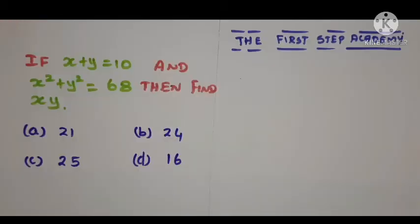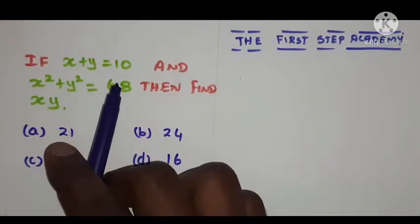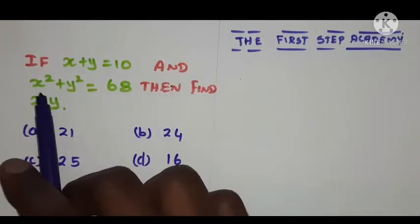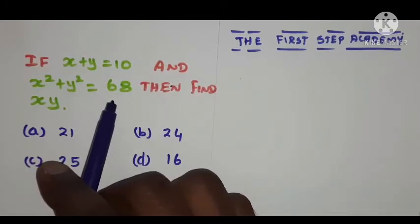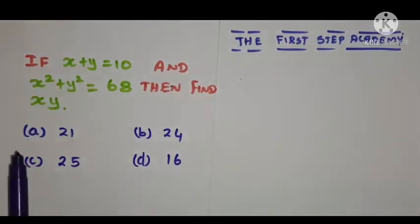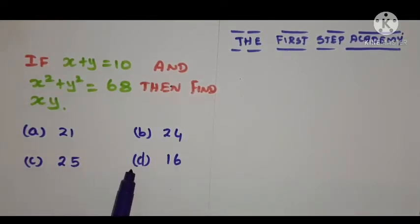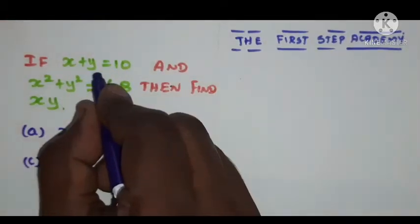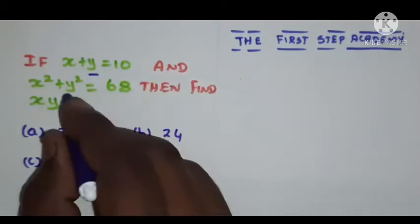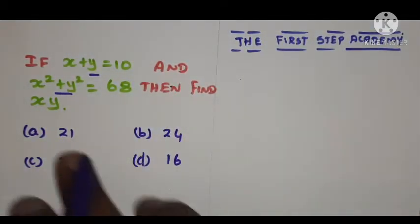The question is: if x plus y is equal to 10, and x squared plus y squared is equal to 68, then find x into y. The given options are: option A — 21, option B — 24, option C — 25, option D — 16. They have given two values: x plus y equals 10, and x squared plus y squared equals 68, and they are asking us to find x into y.